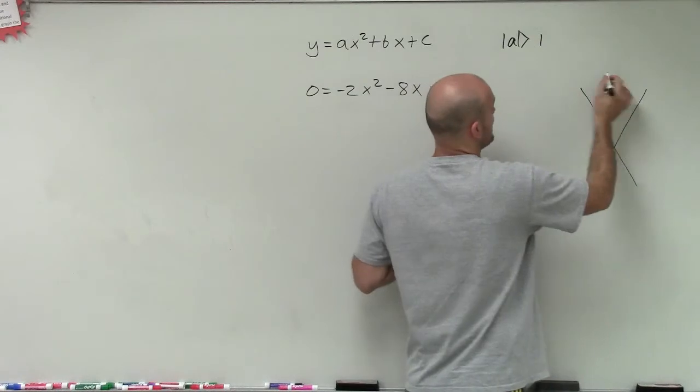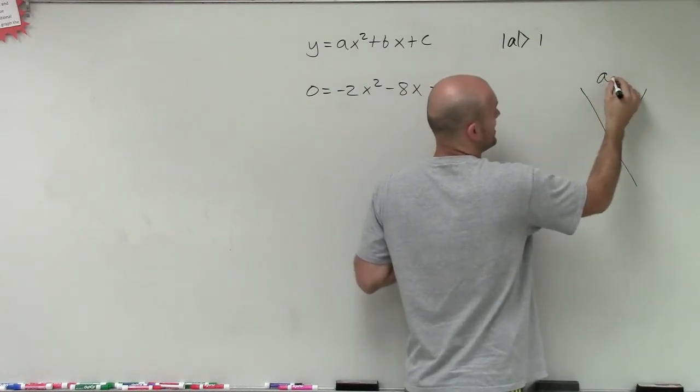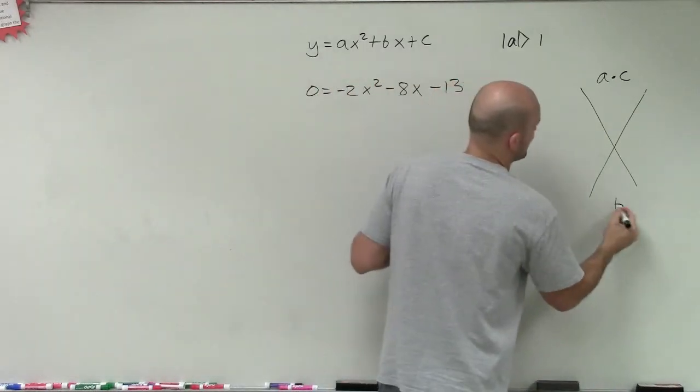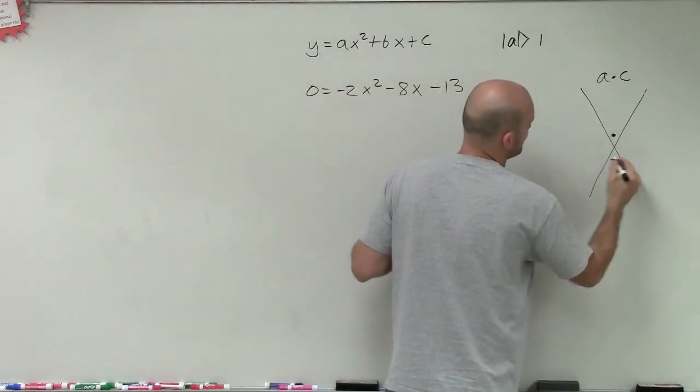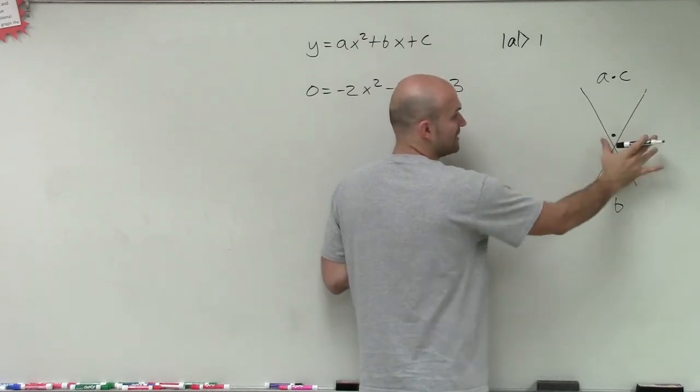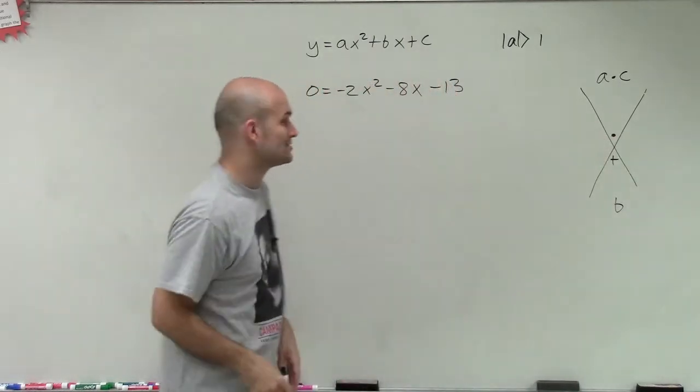So when using the diamond method, when the absolute value of a is greater than 1, we're not just going to have c up top. We're going to use a times c and then b on the bottom. So we're still going to be multiplying plus. However, now when we find these values, they're not going to be our two factors, p and q. But we're going to have to go one extra step.